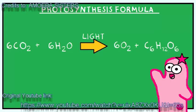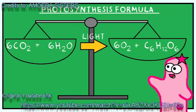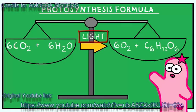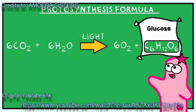Sometimes the formula is written a little differently. Technically, it needs to be balanced. Sometimes light is written on top of the arrow just to show that it is in the presence of light, so it may instead look like this. The C6H12O6 — that product is a sugar, specifically glucose.